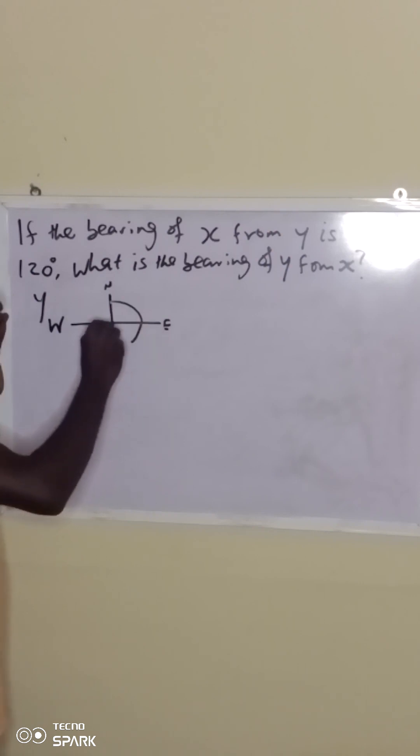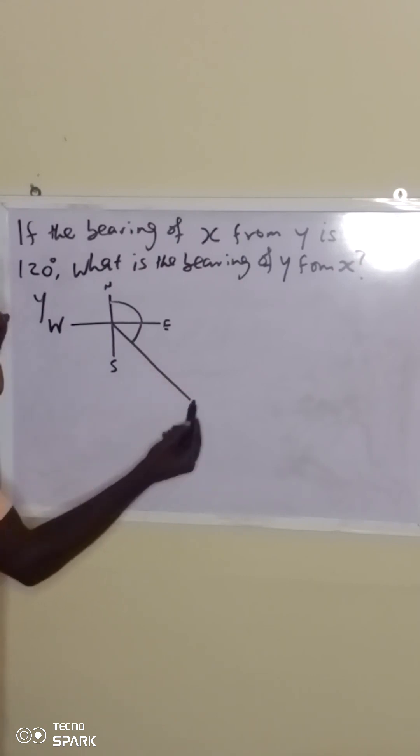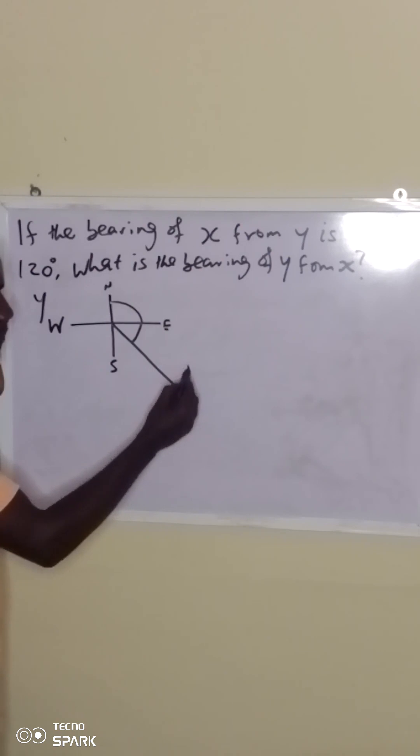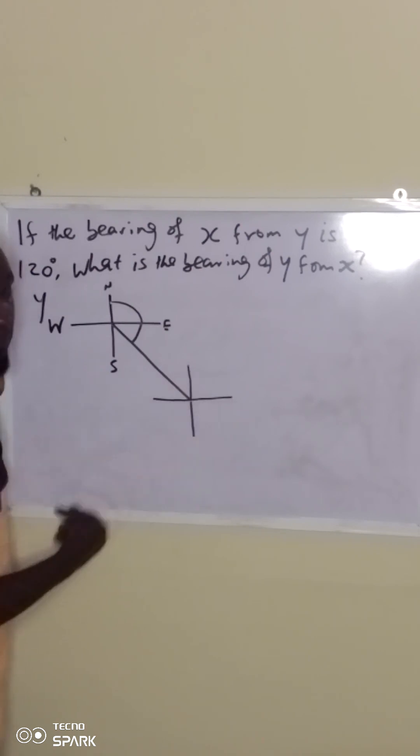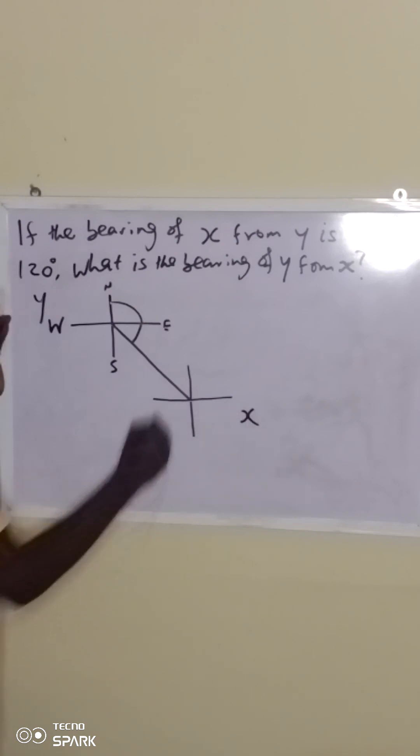So, at this point, we will draw a straight line from the point, then we can stop at this point. Where the point stops, you draw another four cardinal points to cross that point. Now, this point represents point x.